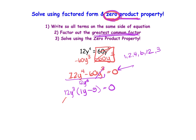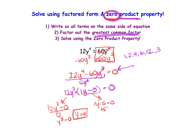From here, we set each factor equal to zero. Setting 12y³ = 0 and dividing by 12, we know y = 0 is one option. Setting y − 5 = 0 and adding 5, we get y = 5. So our two solutions are y = 0 and y = 5.